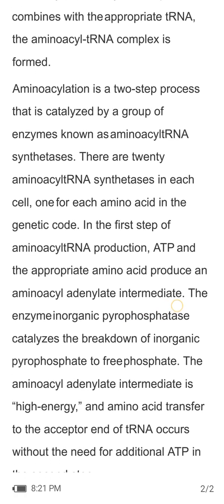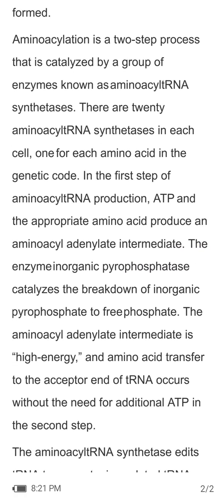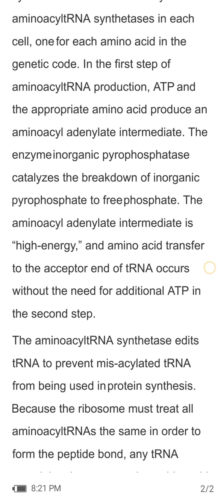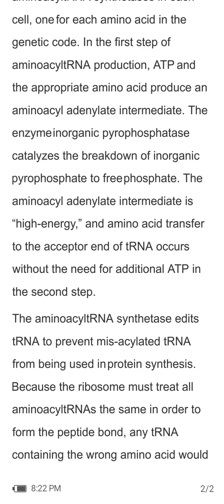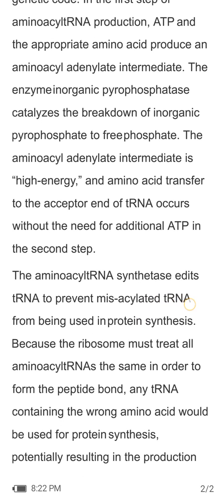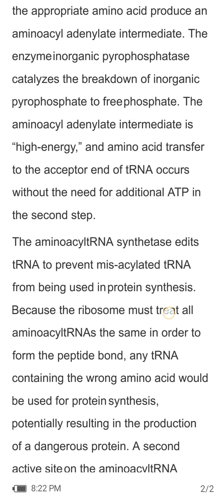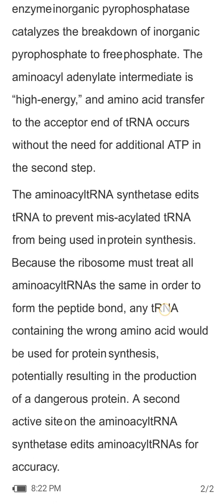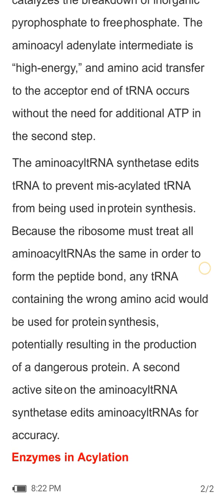Aminoacylation is a two-step process catalyzed by a group of enzymes known as aminoacyl-tRNA synthetases. There are 20 aminoacyl-tRNA synthetases in each cell, one for each amino acid in the genetic code. In the first step, ATP and the appropriate amino acid produce an aminoacyl-adenylate intermediate, with inorganic pyrophosphate released. The aminoacyl-adenylate intermediate is high-energy, and aminoacyl transfer to the acceptor end of the tRNA occurs without the need for additional ATP in the second step.